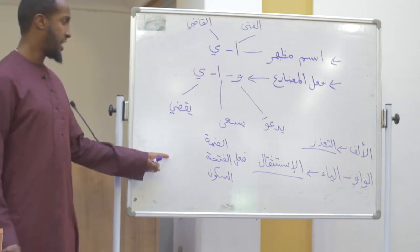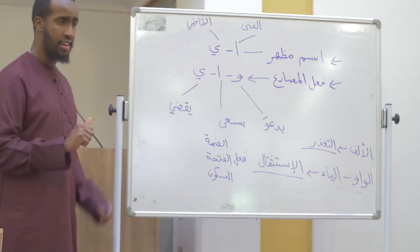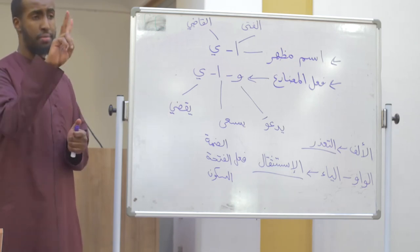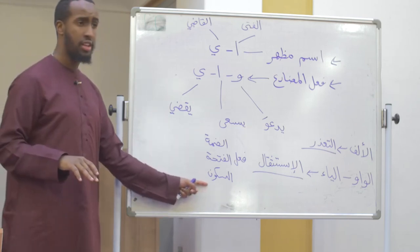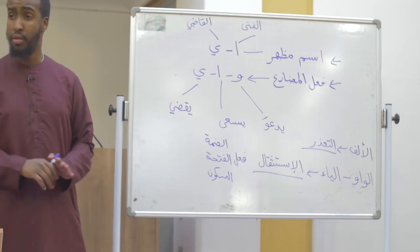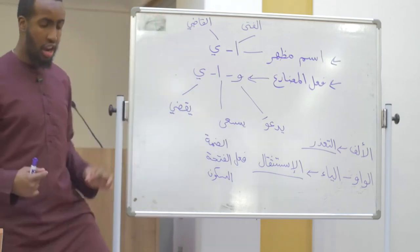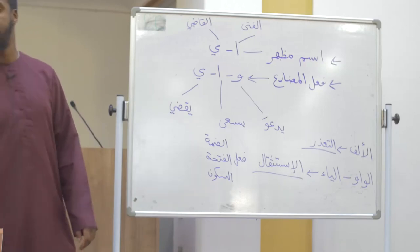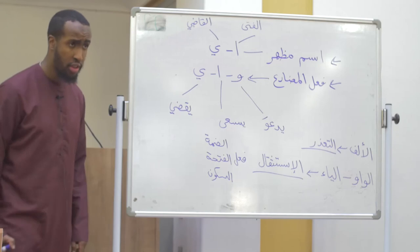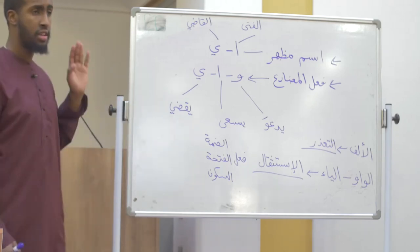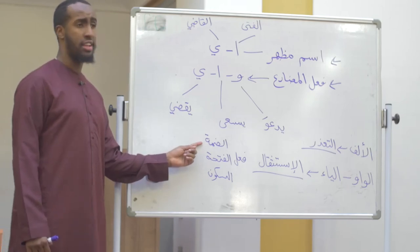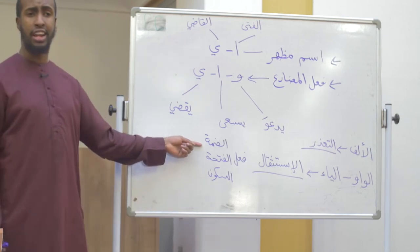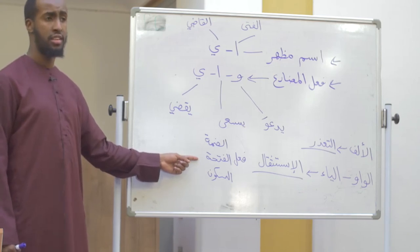If the last letter is an alif — pay attention. If the last letter is an alif, it is only muqaddar two times. There are three halat that the fi'il goes through. The word yas'a — the last letter is an alif maqsura. It is muqaddar when it's dhammah and also muqaddar when it's fathah.